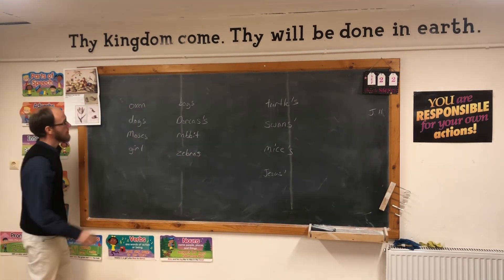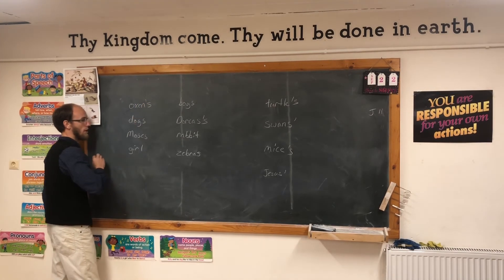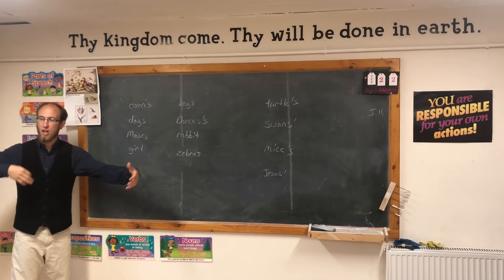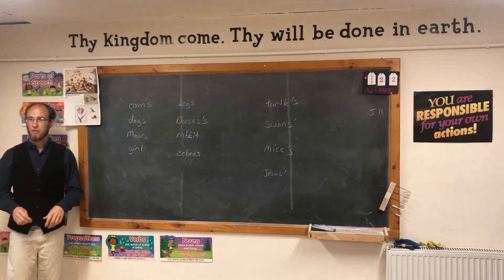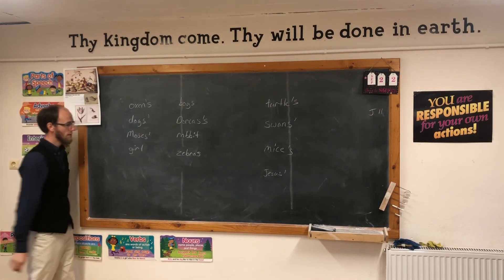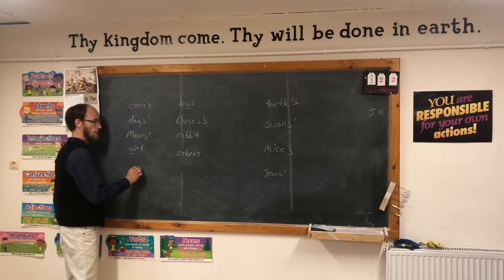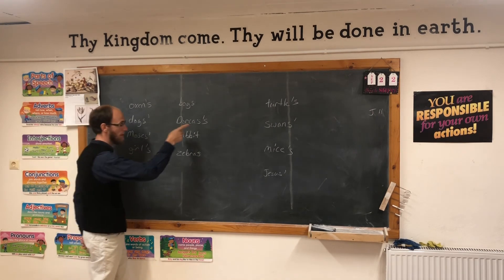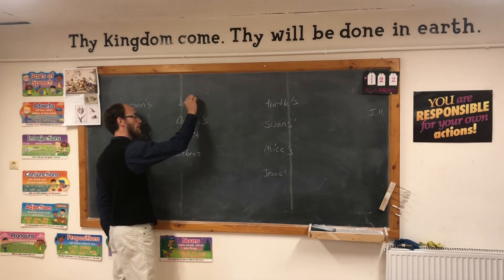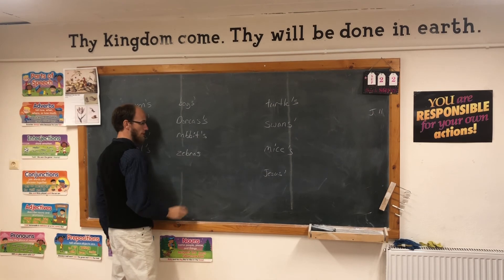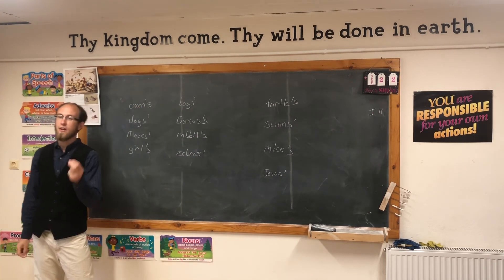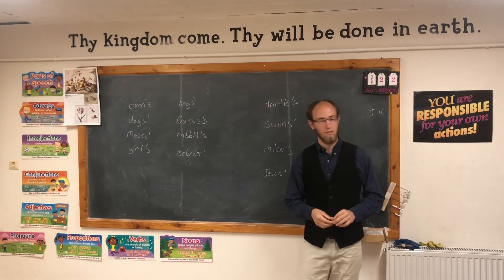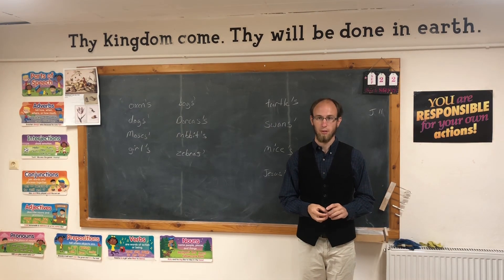Let's practice. Oxen — apostrophe S. Dogs — apostrophe S. Three dogs possessive — just put an apostrophe. Moses — apostrophe. Moses' rod. A girl — apostrophe S. If it does not end with S, put apostrophe S. If it does end with S, just put an apostrophe, unless you have Dorcas. Boys — apostrophe. Dorcas — we did apostrophe S. Rabbit — apostrophe S. Zebras — apostrophe. If it ends with S, just put an apostrophe, unless it is a name that does not end with a Z-S sound. It's really very simple — not a whole lot to remember. Carry on with your work.